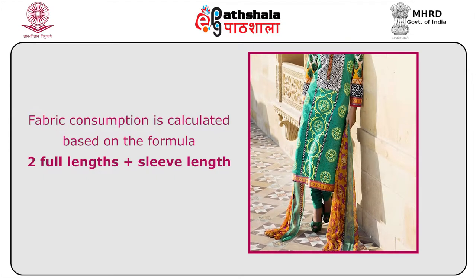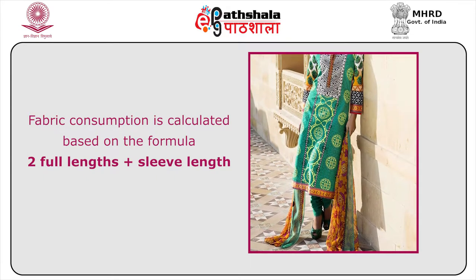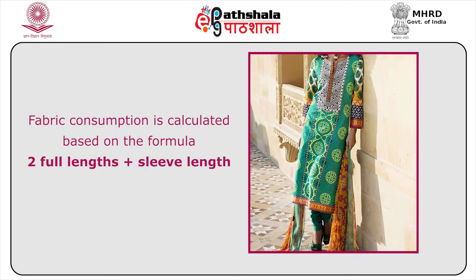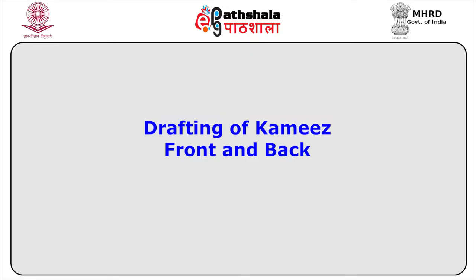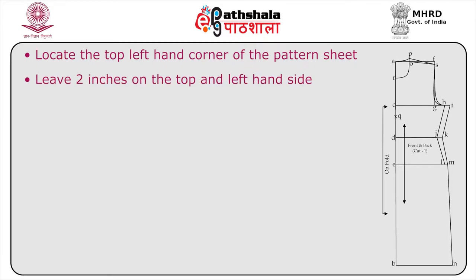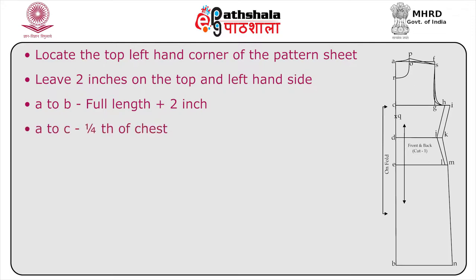Fabric consumption is calculated based on the formula: two full lengths plus sleeve length. The kameez back is drafted first. Locate the top left-hand corner of the pattern sheet and leave two inches on the top and left-hand side. Locate A to B, that is full length plus two inches. A to C is one-fourth of chest.